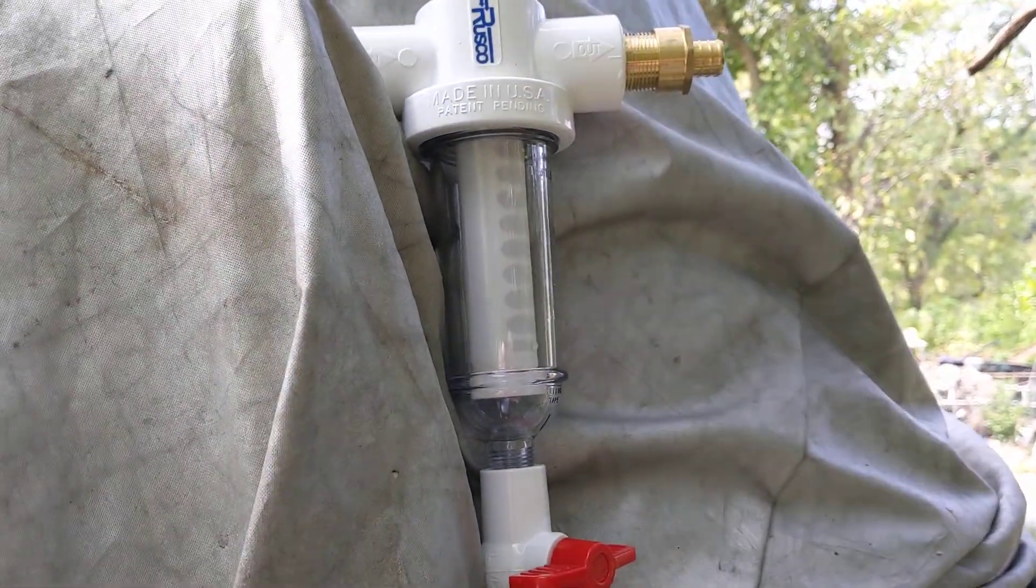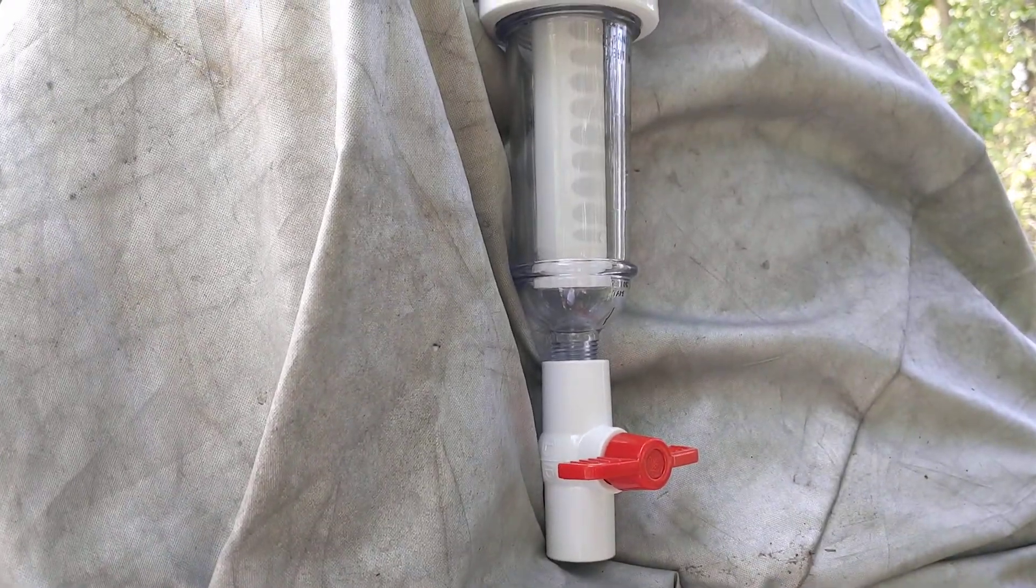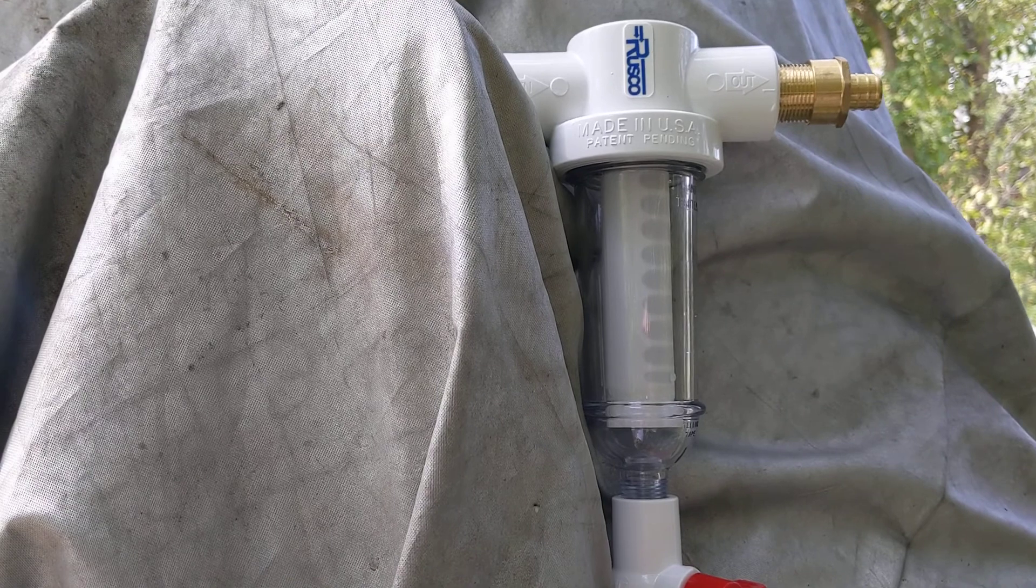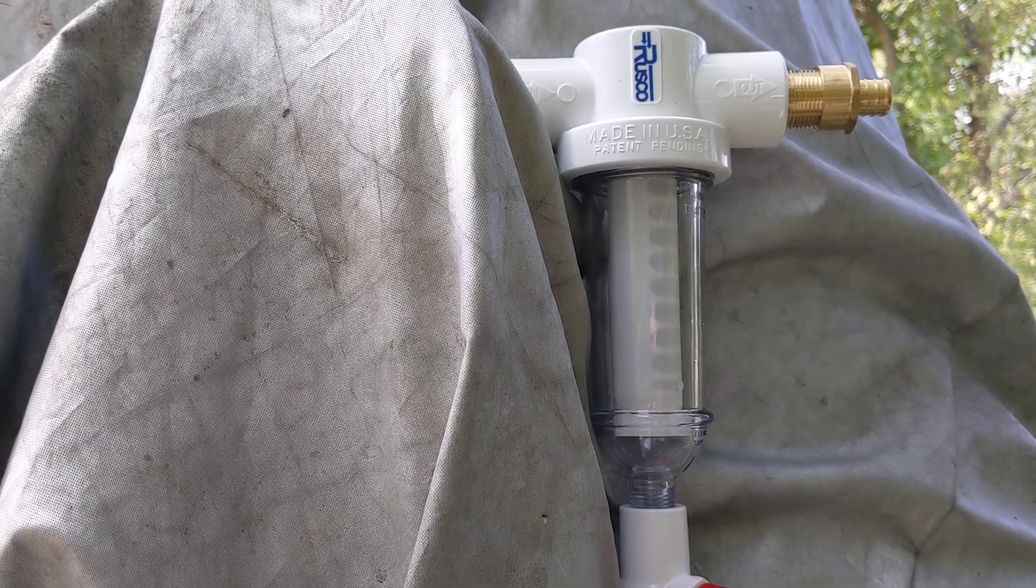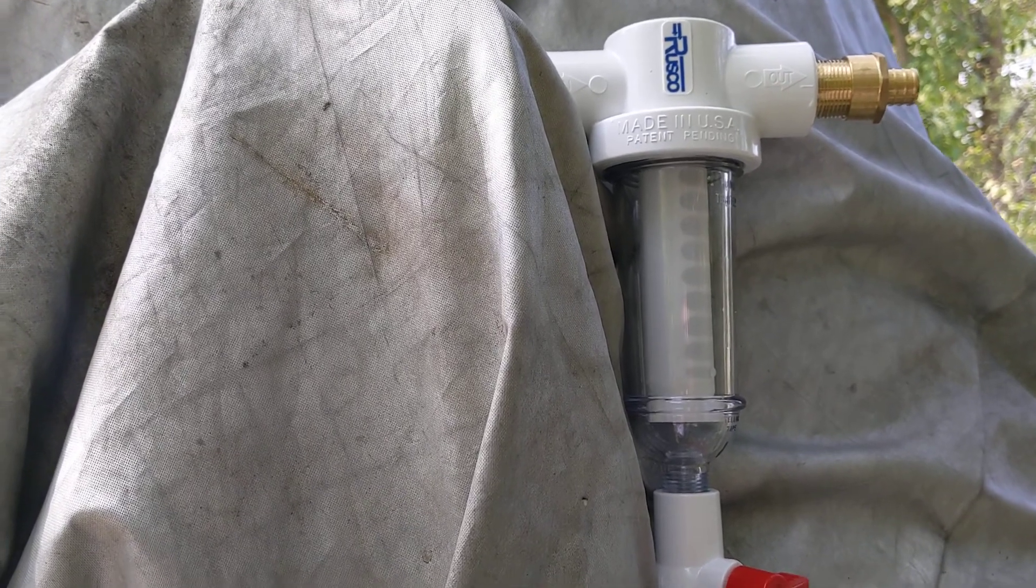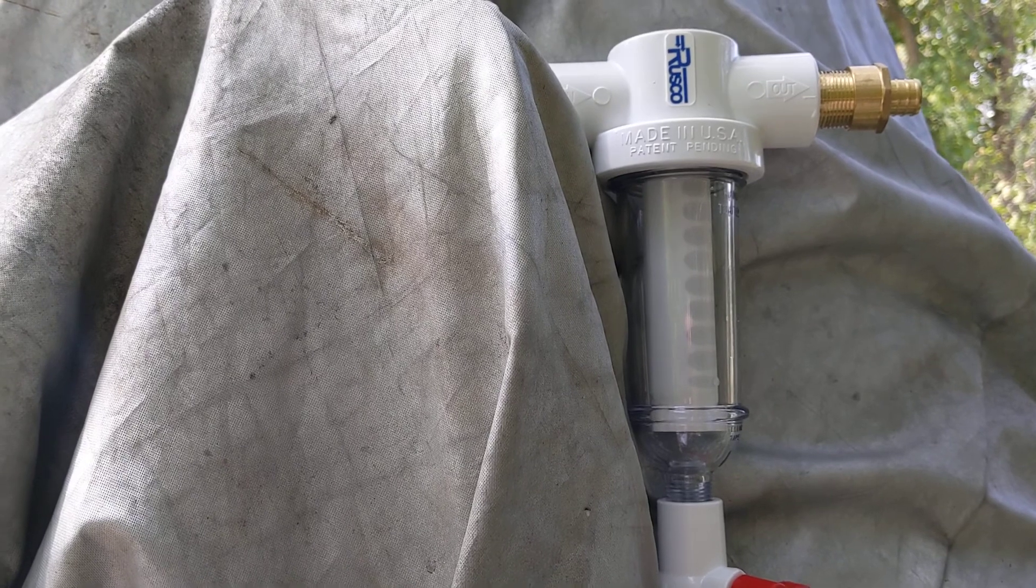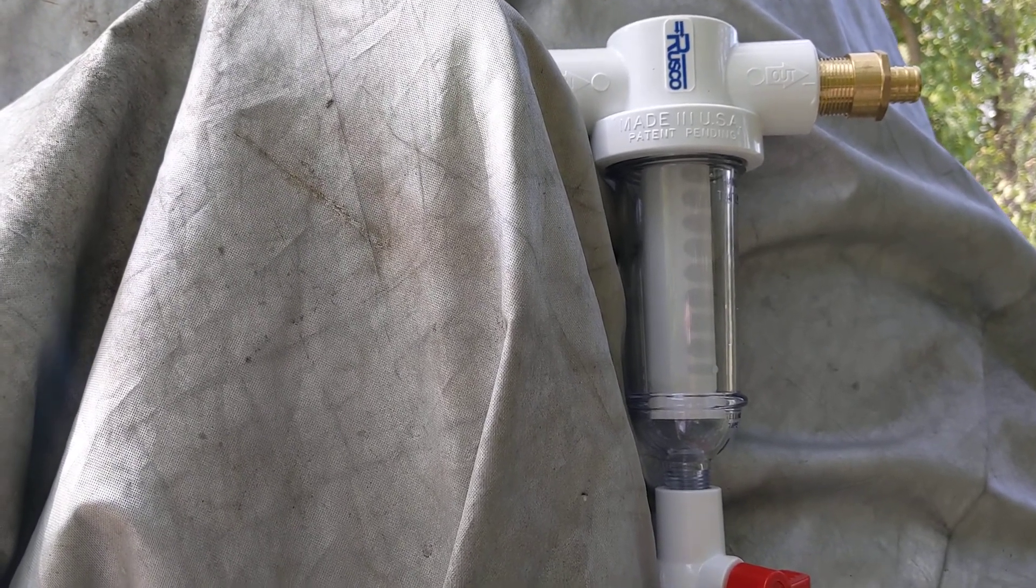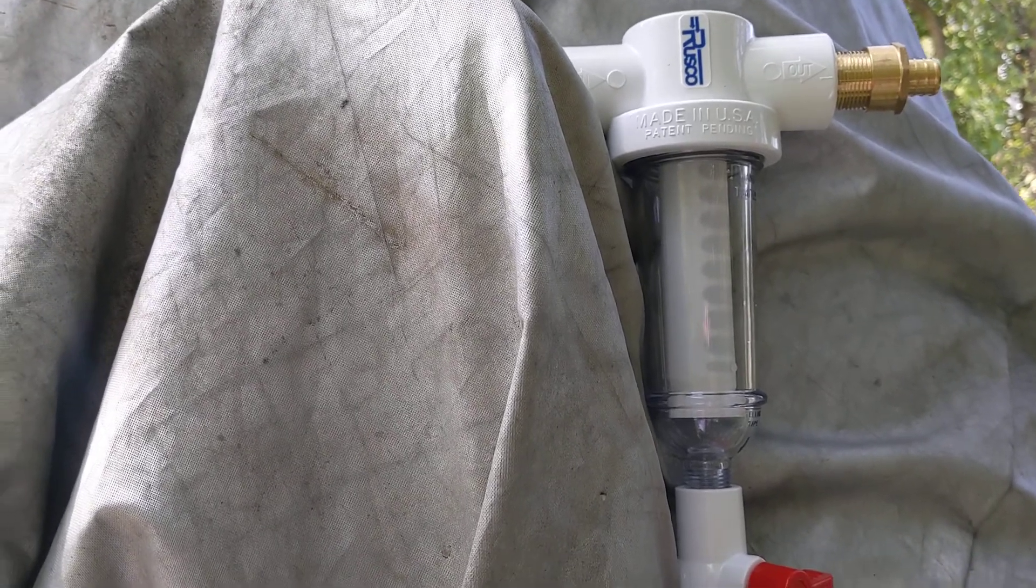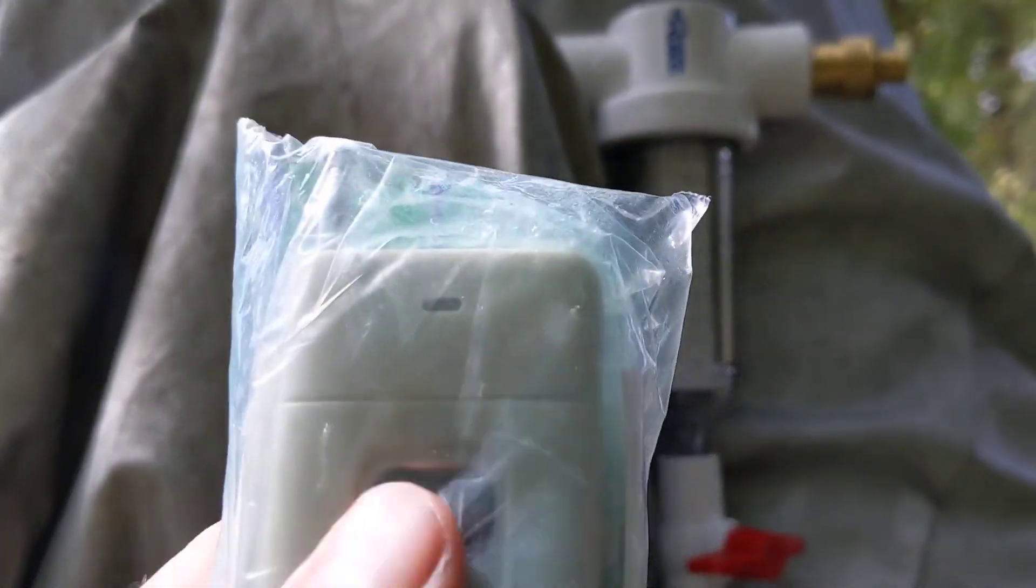I got my Rusco 1000 mesh spin down filter in and this translates to about 15 microns. This is going to be the second or third stop on the water filtration. It's the only one I got in - I've got another one ordered that is a 500 mesh which translates to 30 microns. I'm just going to see how quickly this plugs up. Boom, on!